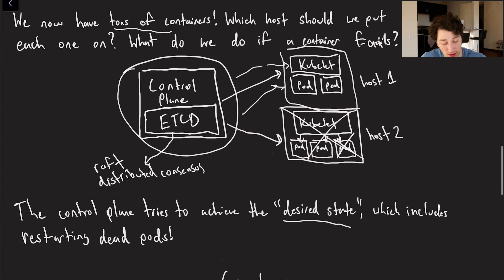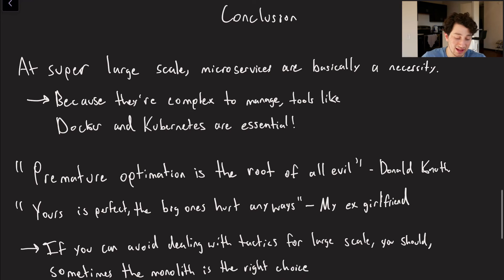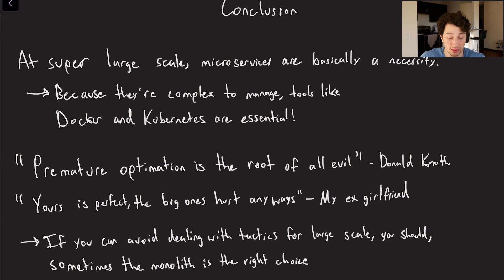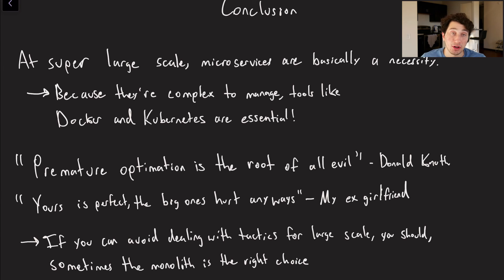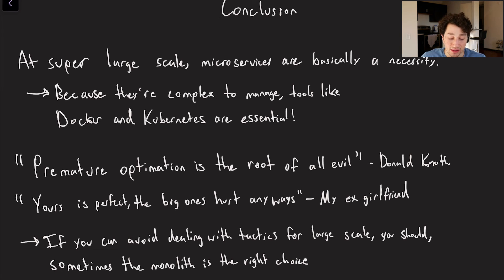We've gone through all of these great systems design concepts. If you're a massive company — a Google, Facebook, or Microsoft — microservices are basically inevitable. You can't really develop every single thing in the same large binary; it's going to take forever to compile, forever to deploy, and it's going to be impossible to scale independently. Because microservices introduce all of this additional complexity when it comes to actually keeping track of and managing your services, Docker — a containerization tool — and Kubernetes — more of an orchestration framework — become very, very important.